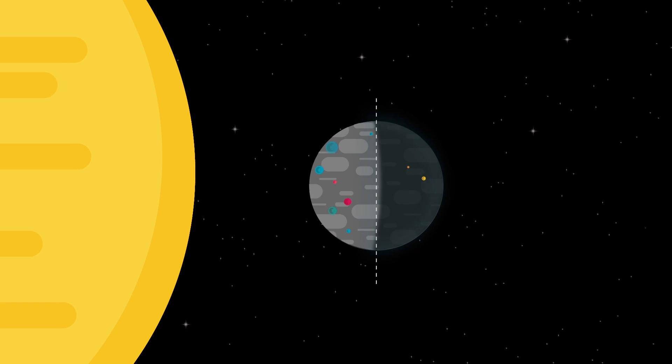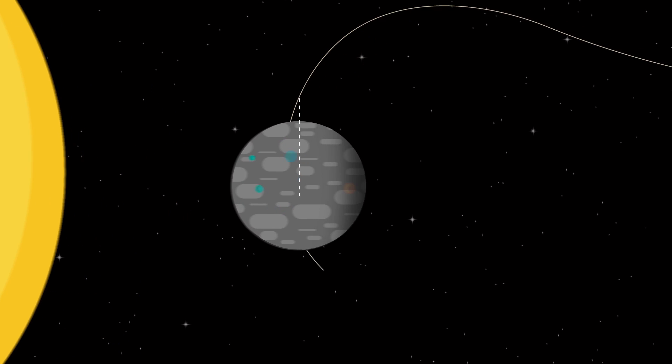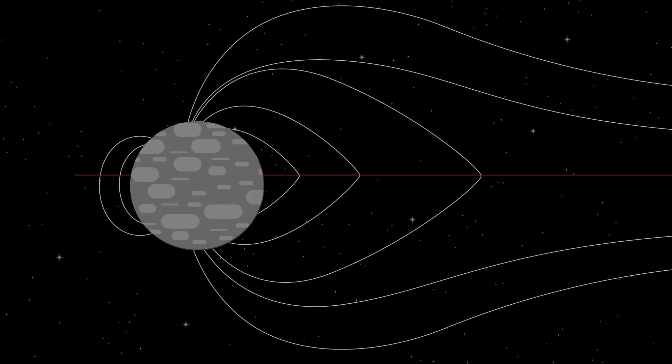Mercury has a bafflingly complex chemistry, a bizarre magnetic field, and even craters full of ice.